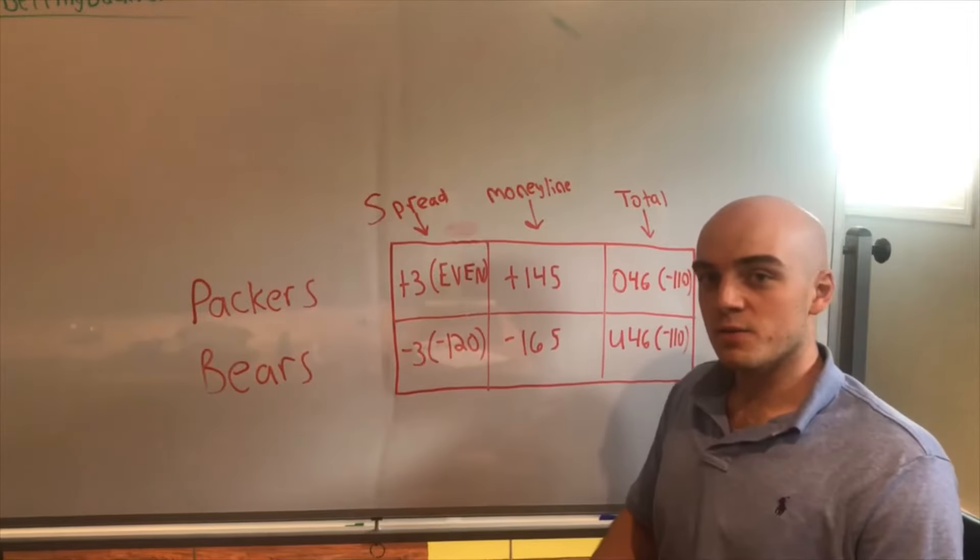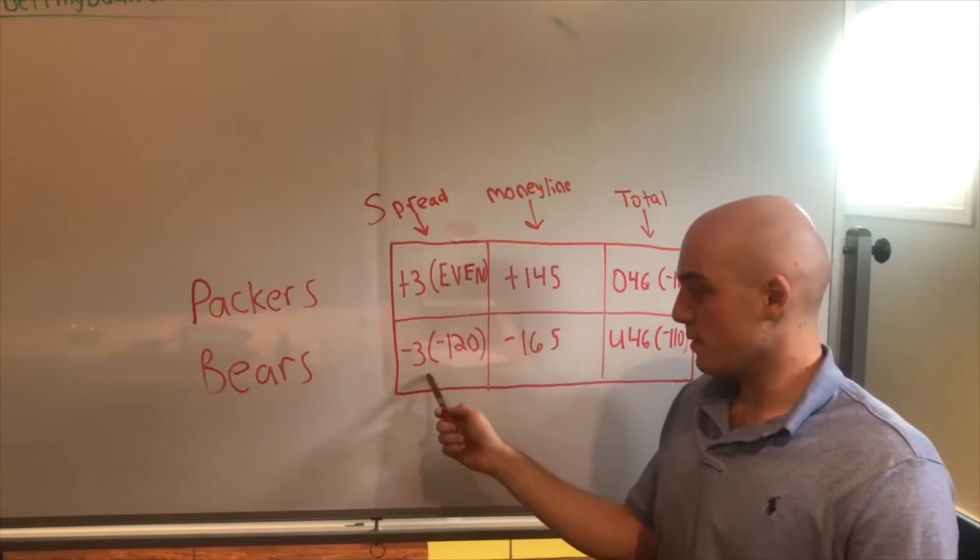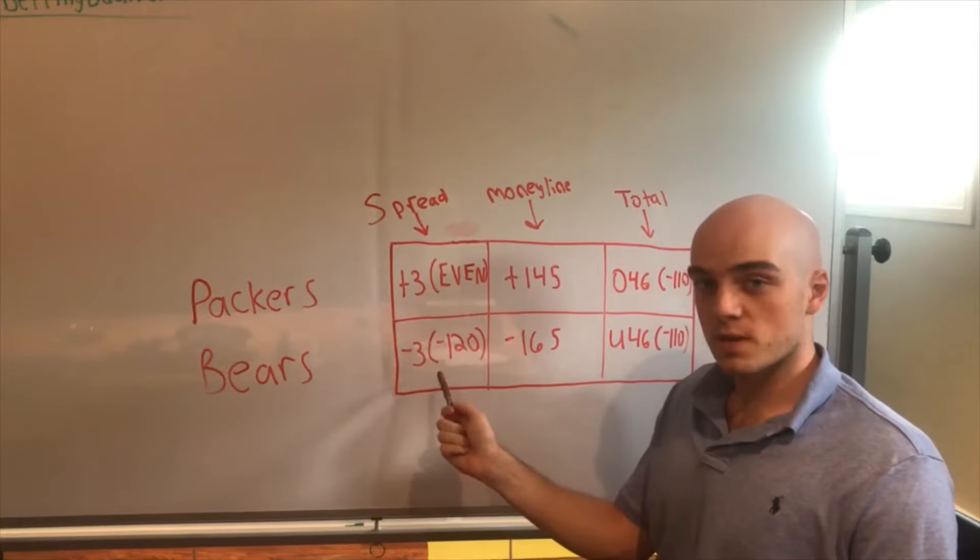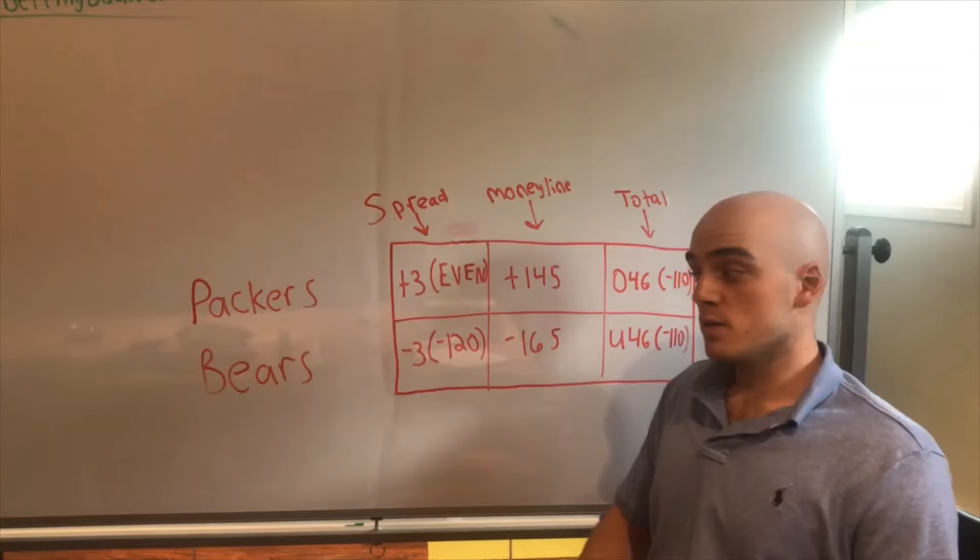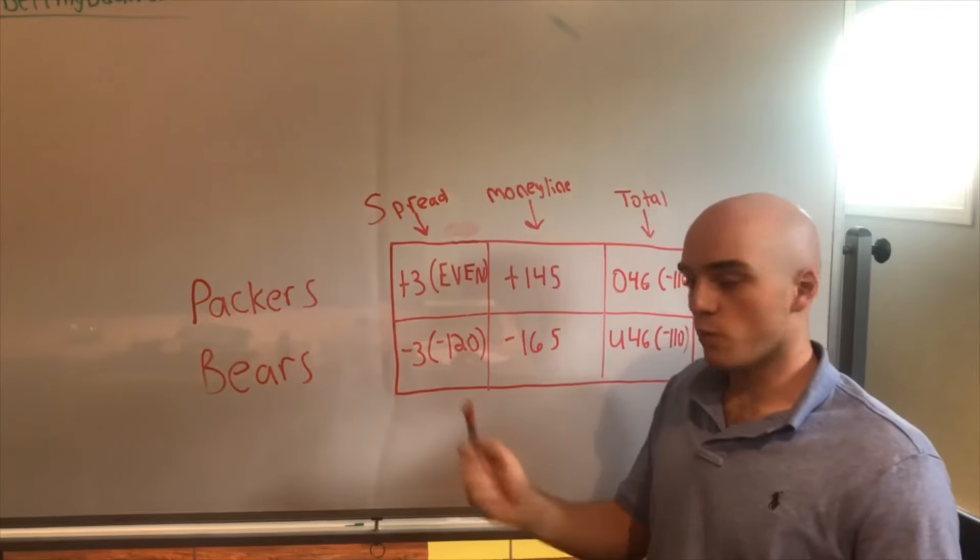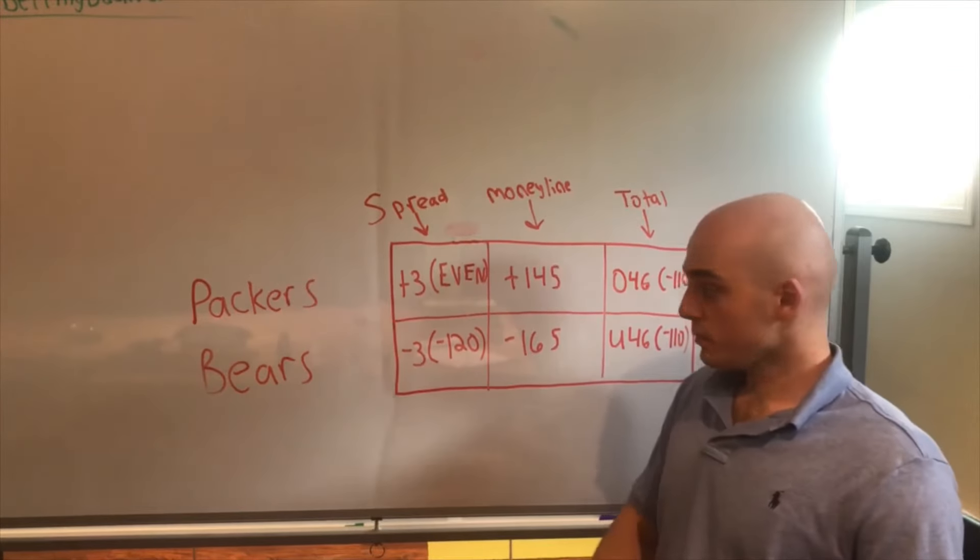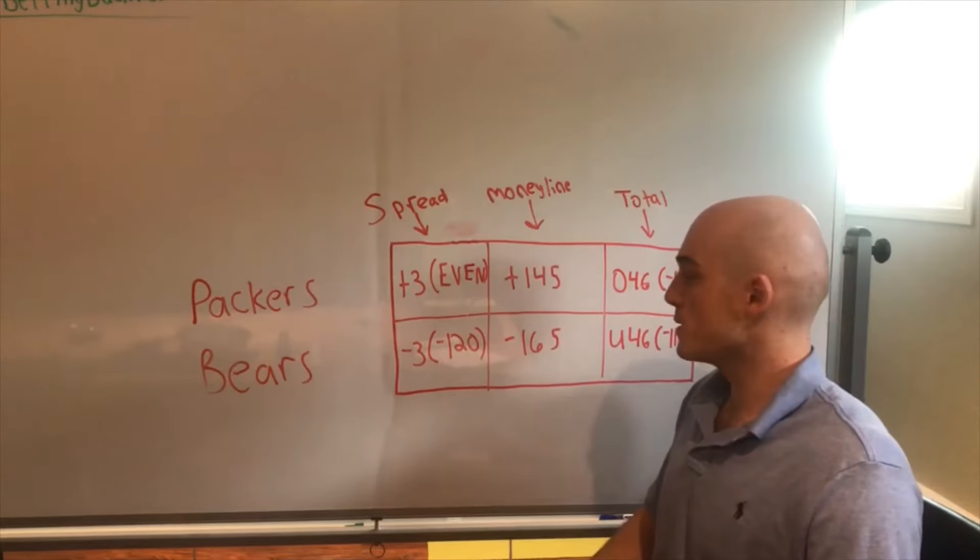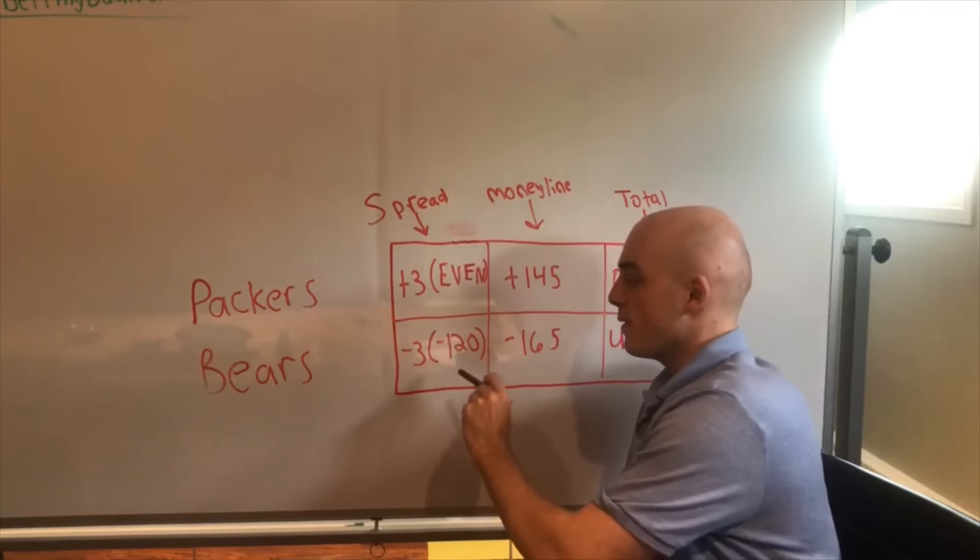Likewise, on the other end, if you bet on the favorite and it's minus however many points, in this case minus three points, then you want that team to cover the spread. You want them to win by more than three points. Typically the odds for spread bets are going to be, for either side, anywhere between minus 120 and plus 100.